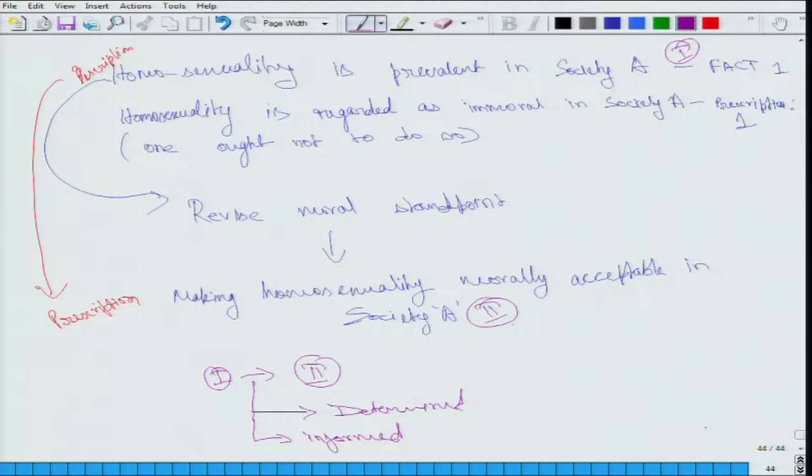When I say determined, well, seeing the prevalence of homosexuality if the governance directly makes homosexuality morally acceptable in society A, then well it is being determined by it. Whereas seeing homosexuality is prevalent in society A, if the governance is trying to find out that well something is prevalent, let us look at or let us review our standpoint. If it is prevalent, maybe why is it so, or we need to revise its moral standpoint, that is informed.